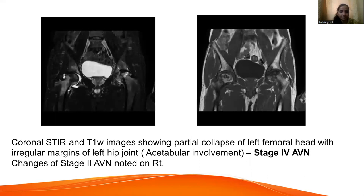This MRI image shows coronal STIR and T1 weighted images showing partial collapse of the left femoral head with irregular margins of the left hip joint. There is acetabular involvement. This is seen in stage four AVN, and changes of stage two AVN are noted on the right.